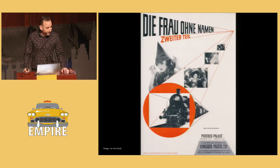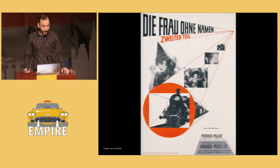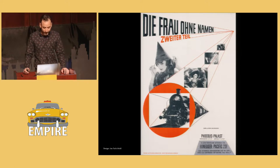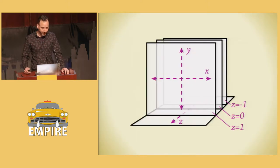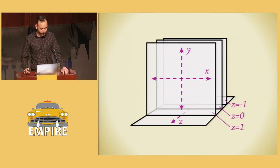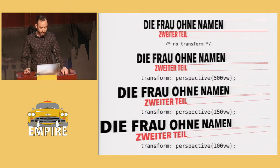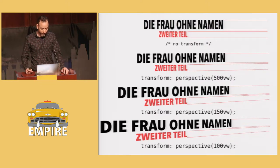The other way is to declare a perspective on a parent element using the perspective property. And every child element transformed within that parent will share the same vanishing point, so they'll all coexist in the same world. In recreating Tschichold's poster, there are two parts to it: the title, 'The Woman with No Name,' and the subheading in red, which says 'Part 2.' These two elements share the same vanishing point, so we're going to use the perspective property on a containing element. When you use perspective, you have to set its length, and that length indicates the simulated distance you are away from the 3D plane, which sets the intensity of the 3D effect.